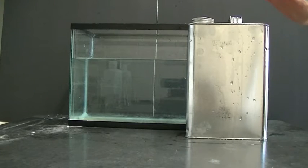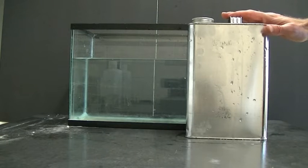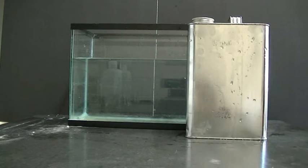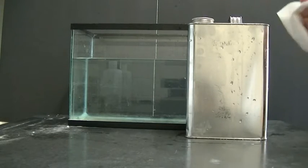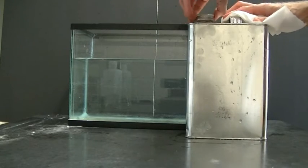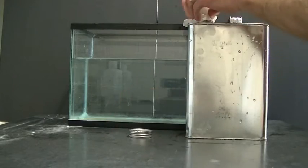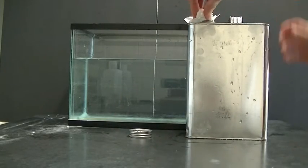Now to get ready for the trick, I want to make it look like this can is completely empty. So to do that, I'm going to need to get some of the water that's trapped in here out so it won't look like it's dripping when I invert it later on.